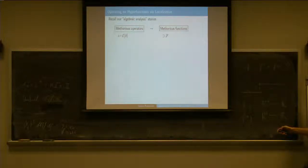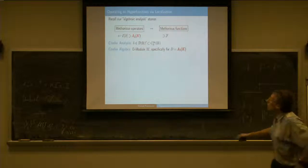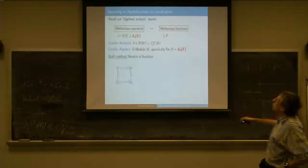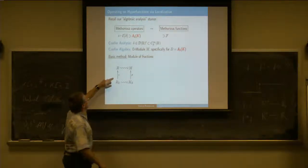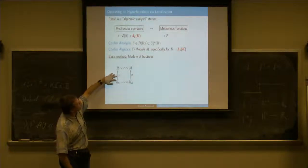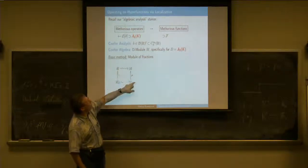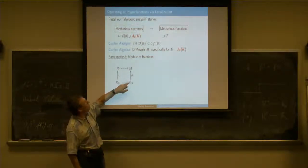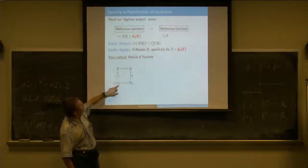The idea is very simple: in the algebraic analysis viewpoint, I always have an operator ring and then a module on which they operate. Like in D-module theory—if you have a ring R and a localization of it in which it almost embeds, then you can do the same thing with the module. If you have a module on which R operates, then you can get a bigger localized module on which the bigger ring operates.